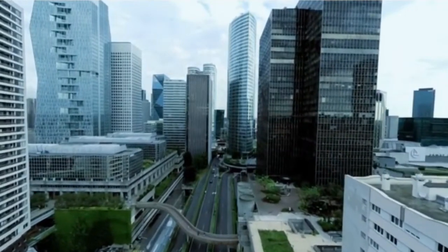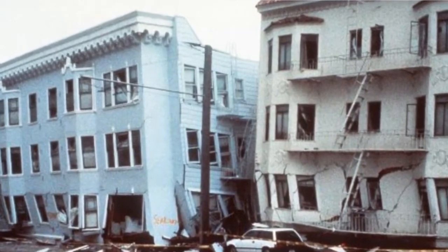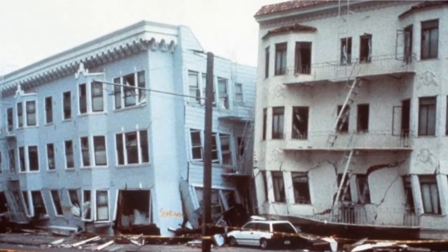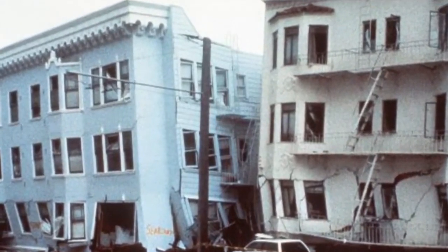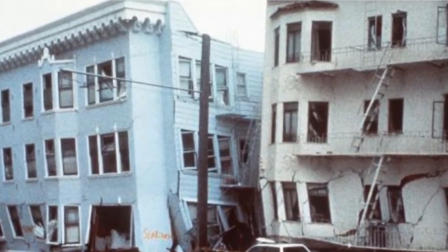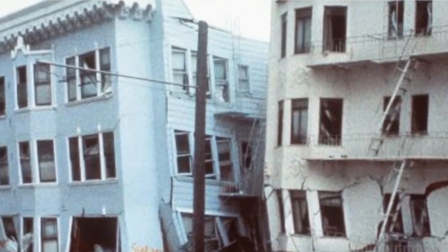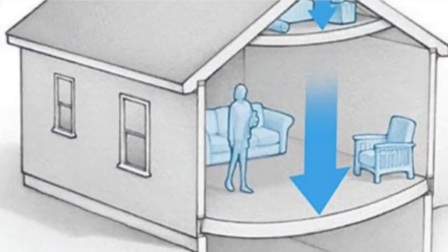Let's start with vertical load. Vertical loads, or gravity loads, are those forces that are applied perpendicular to the roof or floor system. These loads are separated into two categories: dead load and live load.